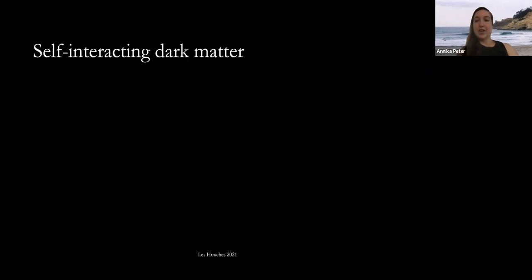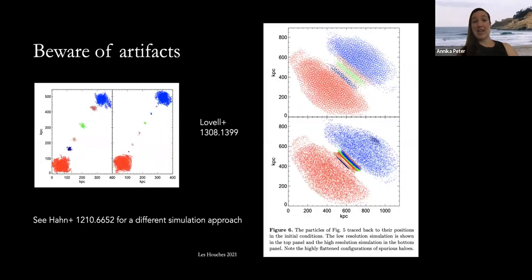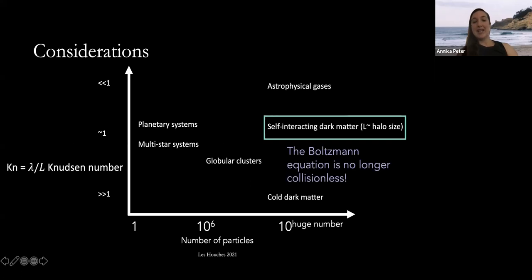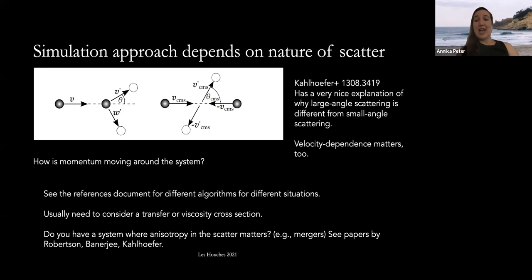Now let's talk about self-interacting dark matter, where you're no longer solving the collisionless Boltzmann equation. Because your Knudsen number is of order unity, you're not solving the collisionless Boltzmann equation but you're also not solving hydrodynamic equations — you're doing something in the middle. There's an ever-growing literature on how to properly simulate dark matter that has some kind of self-interaction.